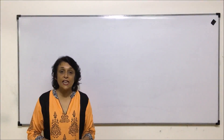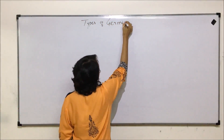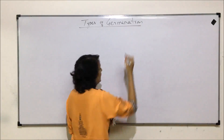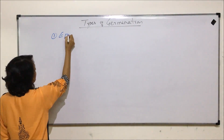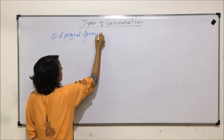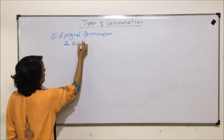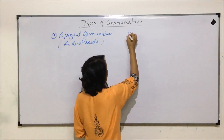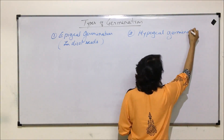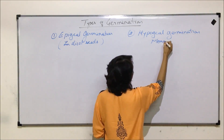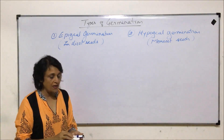In this section, we will be discussing the types of germination. There are two types. The first is known as epigeal germination, which is seen in case of dicot seeds. And the second is known as hypogeal germination, and this is seen in monocot seeds. Now let us understand what exactly we mean by these two terms.